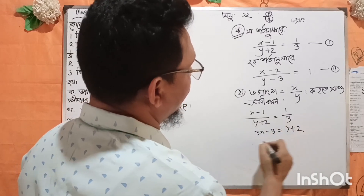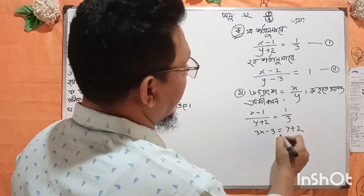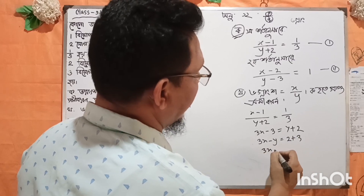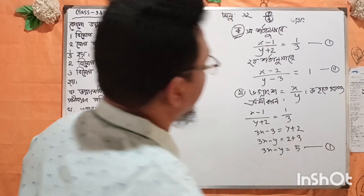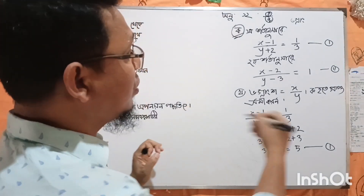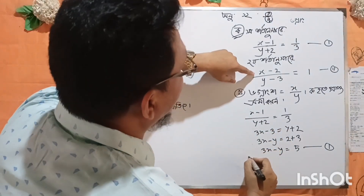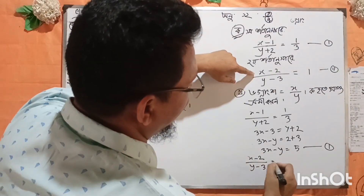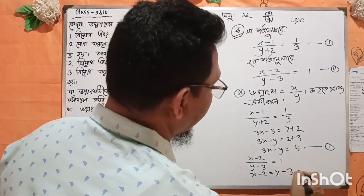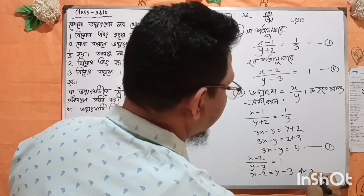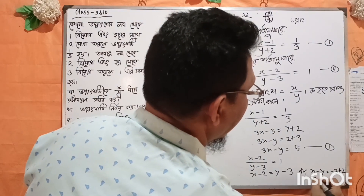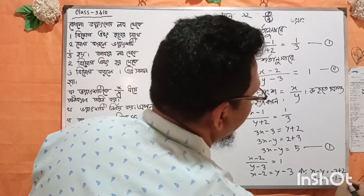So y plus 2. The number of x minus y gives us x minus y plus 3. Or, 3x minus y plus 5. So the value of x is expressed as x. The number of x minus y plus 2 is written as x minus y plus 2. This is the number of x minus 2. We have completed this expression.